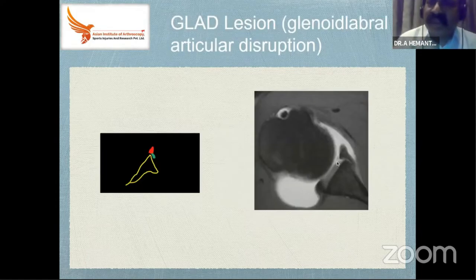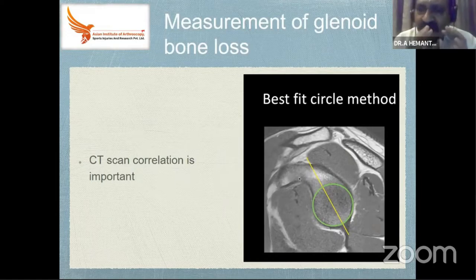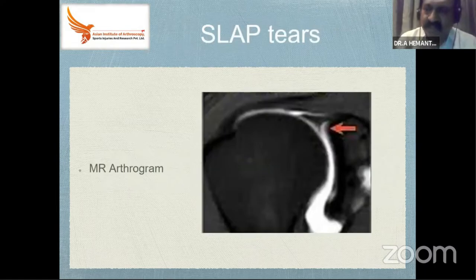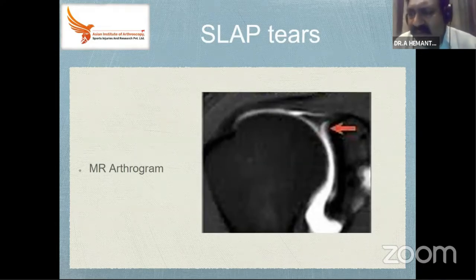There are also GLAD lesions — glenoid labrum articular disruptions. To measure glenoid bone loss, a rough technique is the best-fit circle method; if in doubt, compare with the opposite side. The SLAP tear is also quite commonly asked about — the SLAP tear is the long head of biceps avulsion. Clinical tests have been described earlier. This is one of the indications for MR arthrography, where fluid will lift up the long head of biceps.